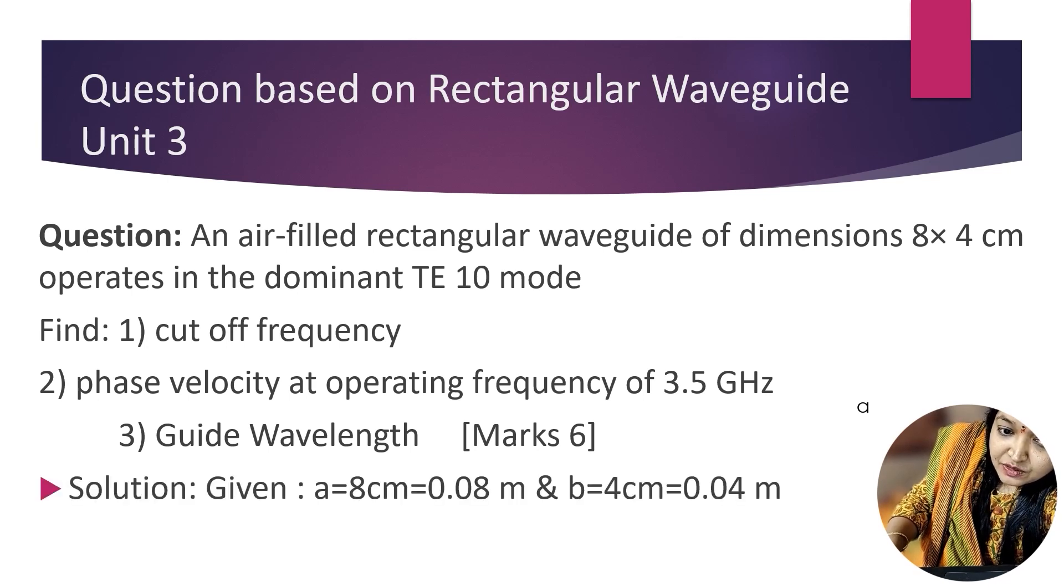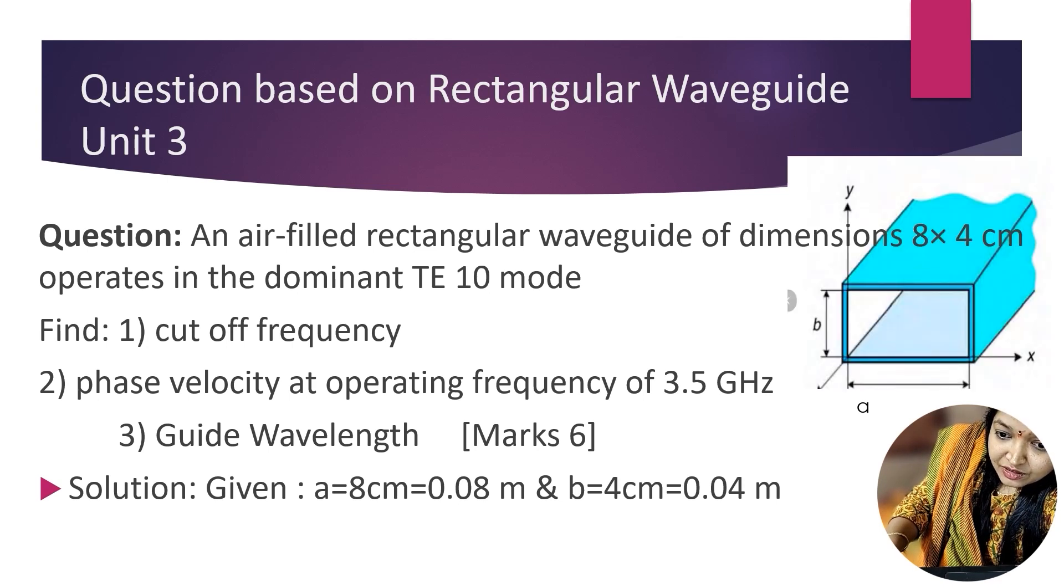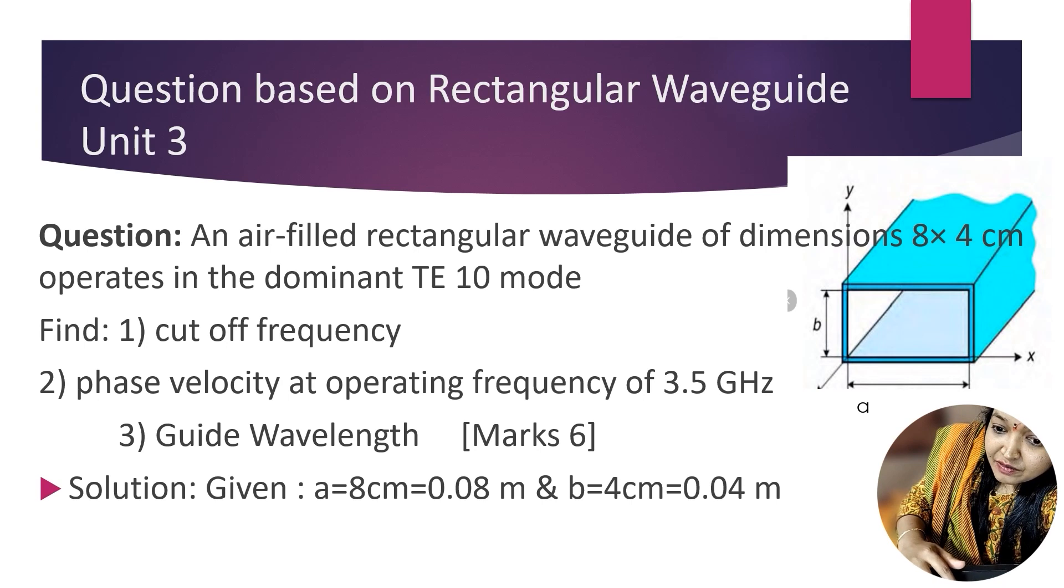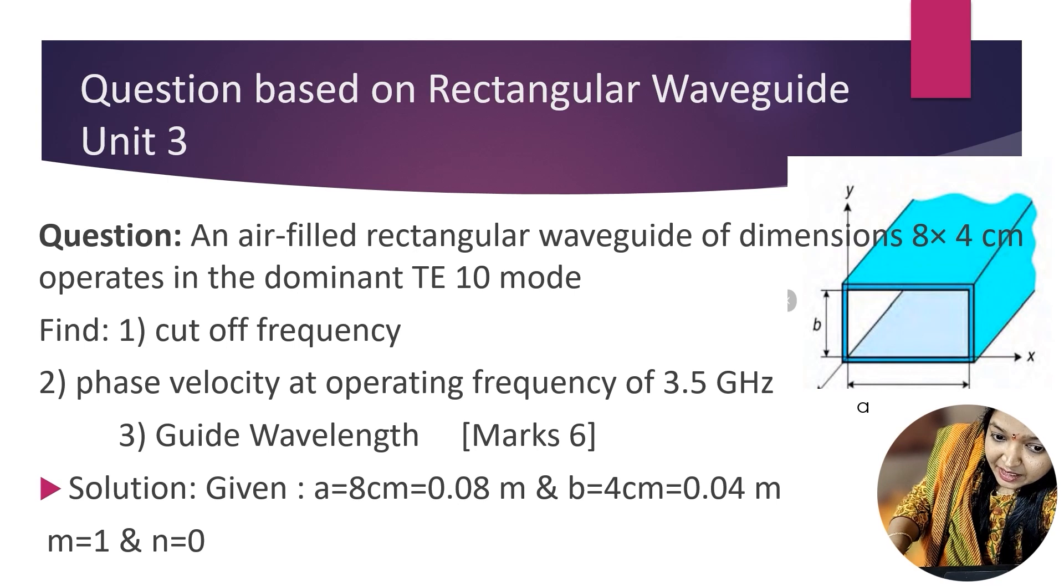So first we want to start the solution. How your waveguide is going to look? So this is the height, this is the width, it is B, this is A. So A is 8 cm and B is 4 cm. We converted it into meter, so it is 0.08 m and this becomes 0.04 m.